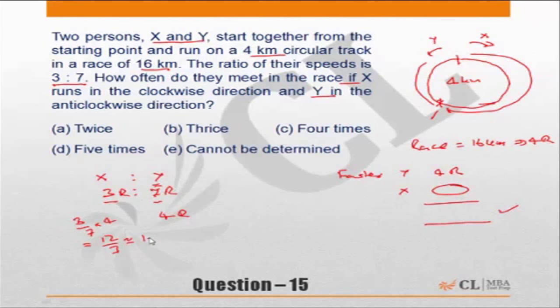So how many rounds have been completed by them together? 4 plus 1.7, which is equal to 5.7 rounds. So they have done 5.7 rounds together by the time Y has completed the race. That means they would have met five times. Correct answer, hence, is Choice D.